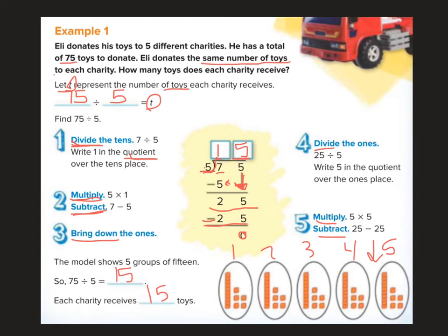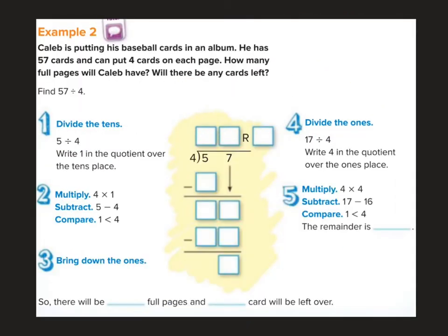Now let's try one with regrouping. Here we have our second example. Caleb is putting his baseball cards in an album. He has 57 cards and he can put four cards on each page. How many full pages will Caleb have? Will there be any cards left? So we're dividing 57 into four equal pages, and we want to know if there are any cards that won't fit on a full page.